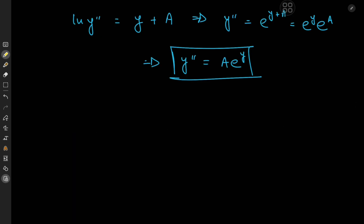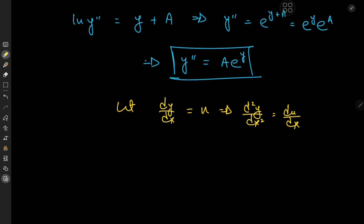We now have an autonomous differential equation with y' and y'' completely in terms of y. So we make the substitution dy/dx = u, which implies the second derivative equals du/dx. That would introduce three variables u, y, and x, which is not ideal — but we fix that using the chain rule: d²y/dx² = du/dy · dy/dx = u · du/dy.